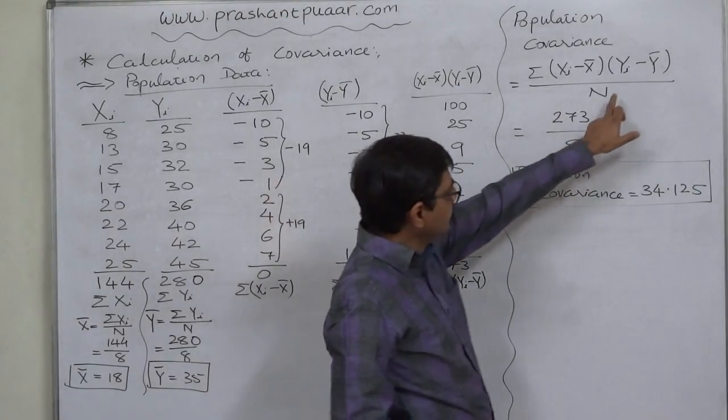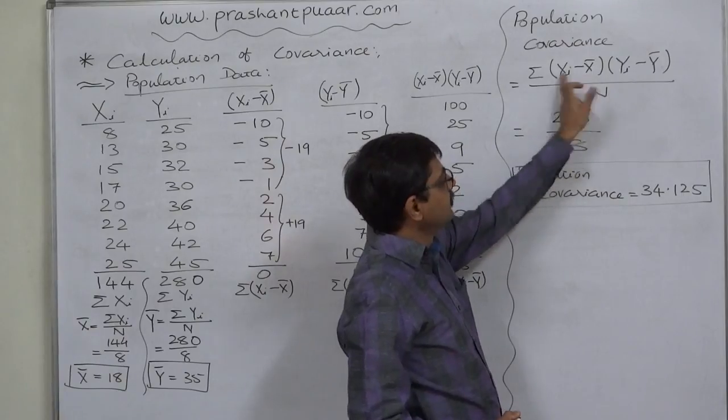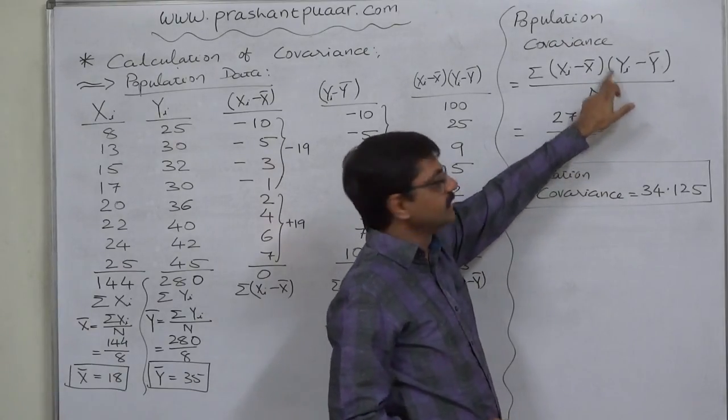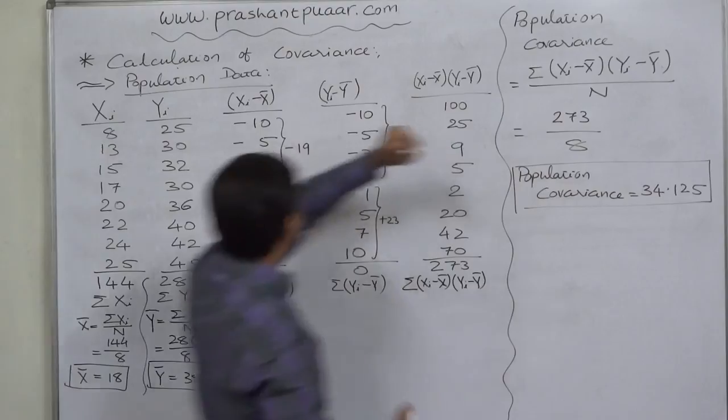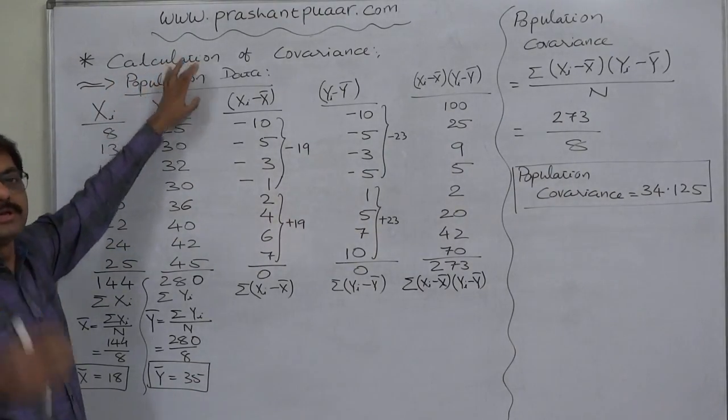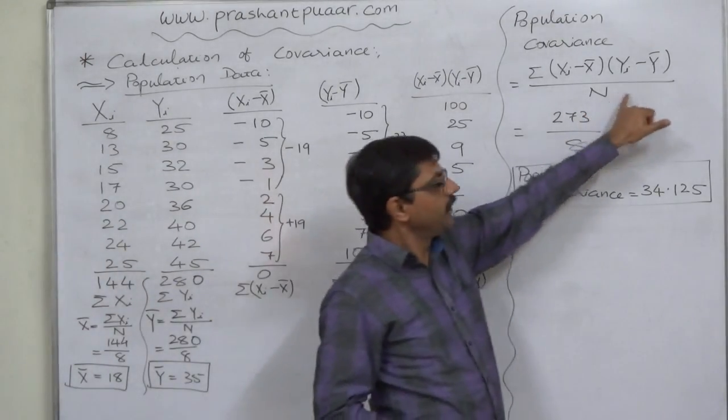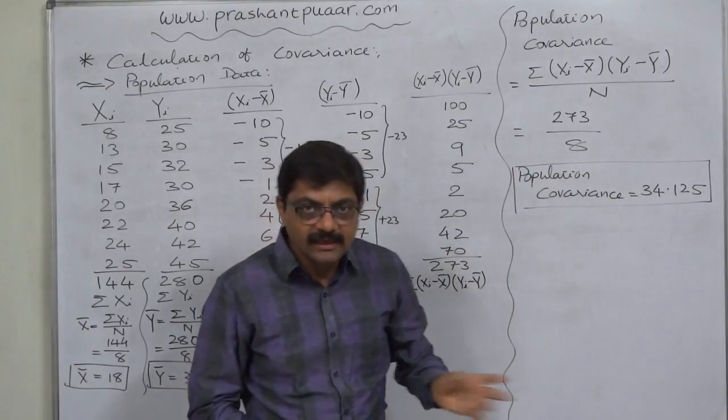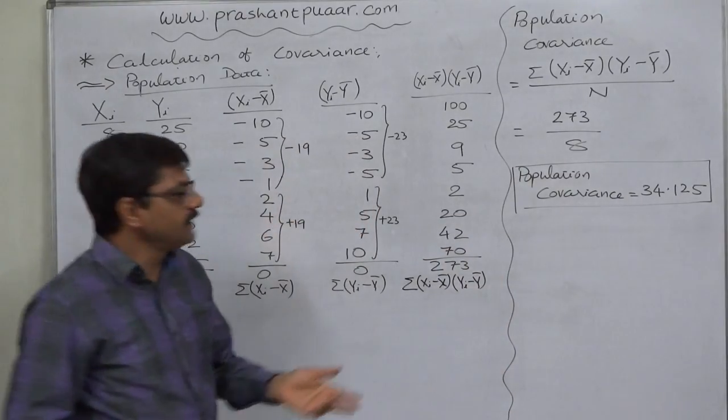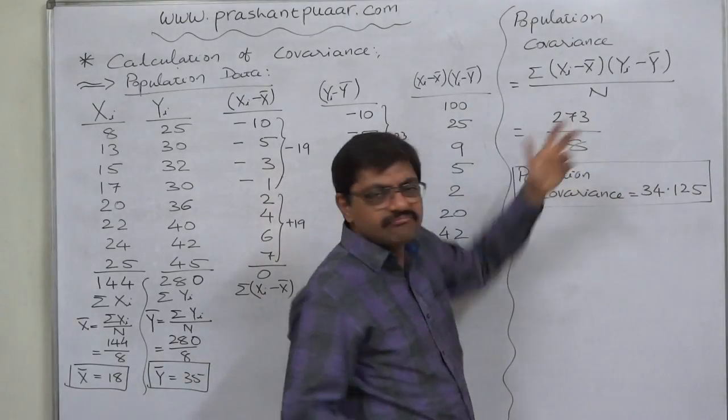So, the remarkable thing is, we need to divide the summation of the products of the deviations by n only when we calculate the covariance for a population data or population covariance. Only difference is, in case of sample covariance, we need to divide it by n minus 1, in case of population covariance, we need to divide by n number of observations.